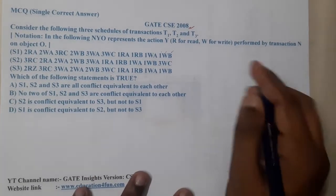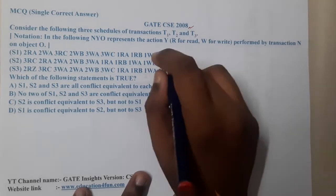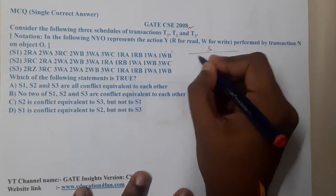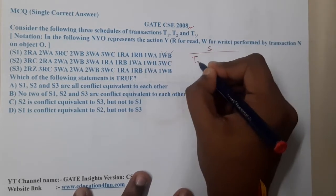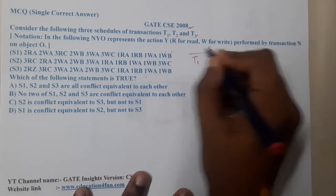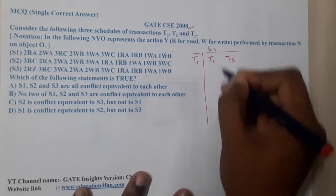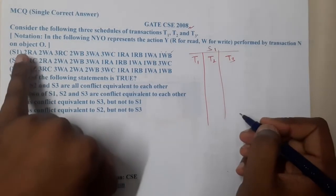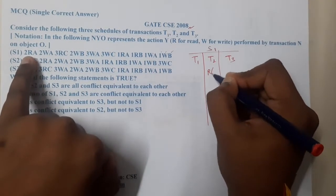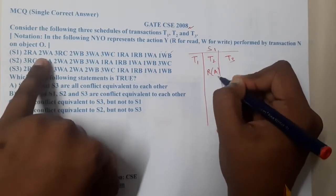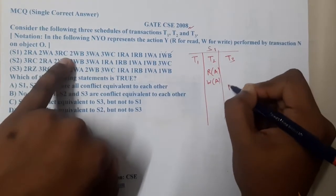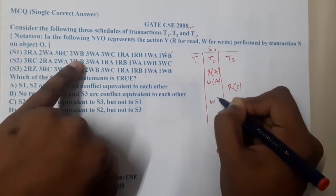The first step we always try to do is converting this into our transaction list. We are having transaction 1, transaction 2, and transaction 3. Let us convert S1 first. When it comes to S1, the read operation on A belongs to T2. So: Read A, Write A, Read C, Write B.